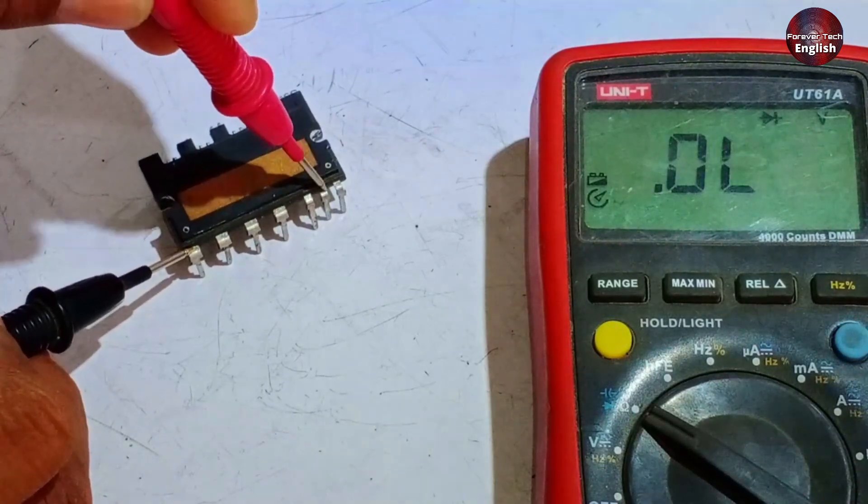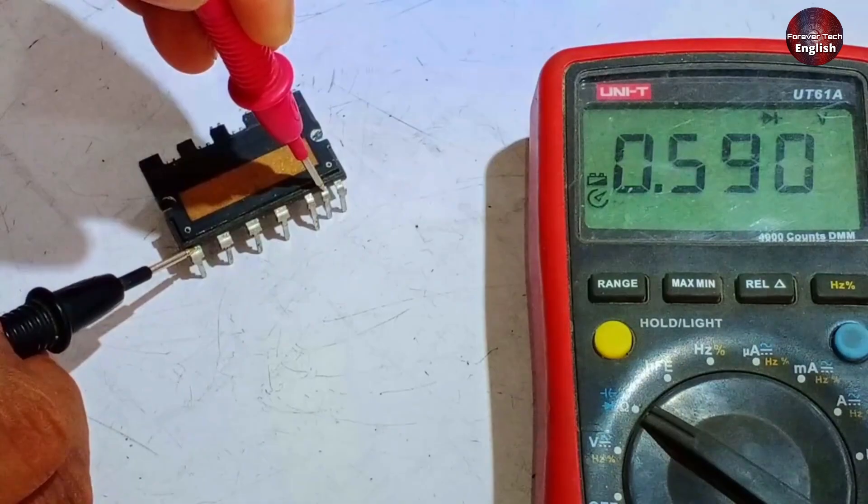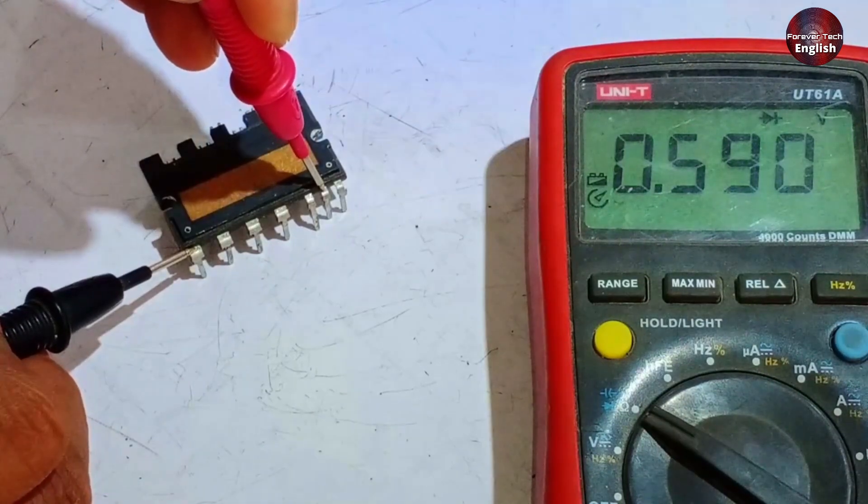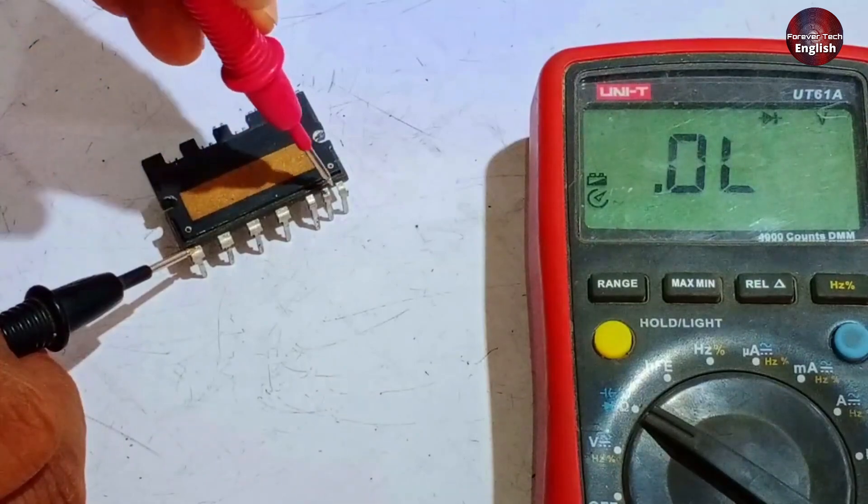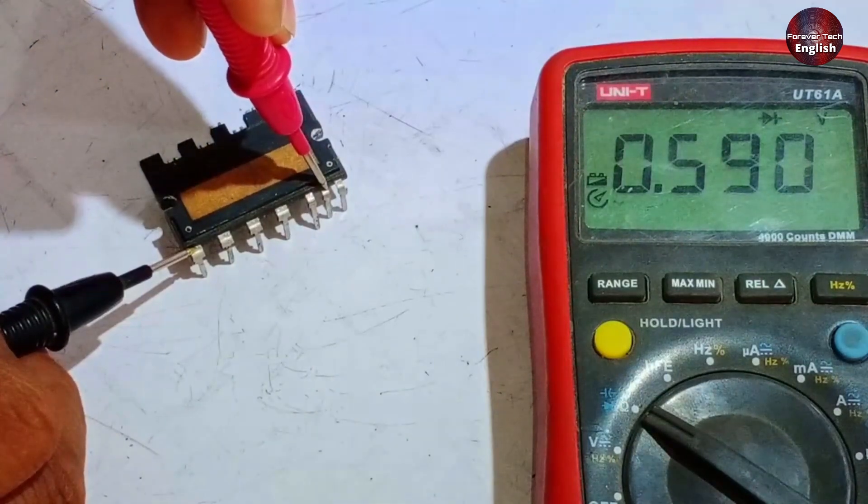Next, we'll check pin 22. There shouldn't be any value displayed here, but it's showing value here. Now, what's the situation here? Both IGBTs have shorted, which is why a value is appearing here, but otherwise, this value wouldn't show.